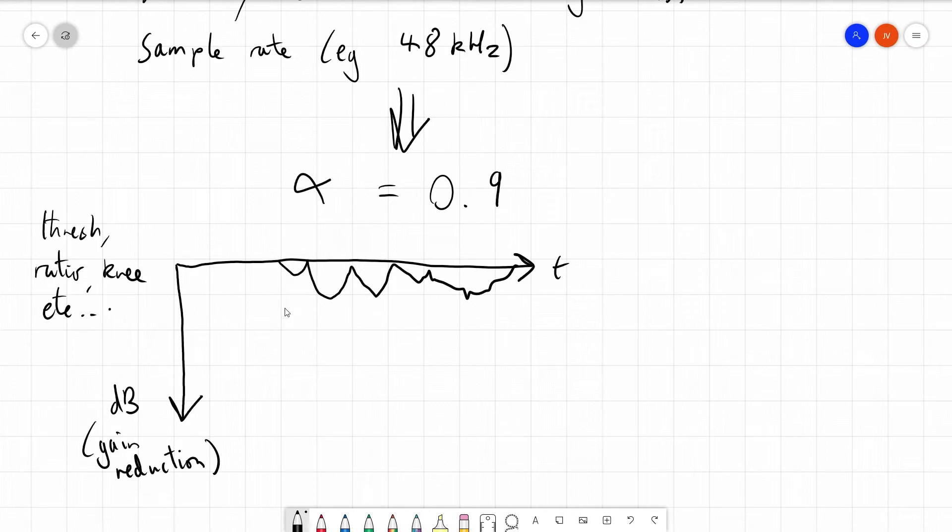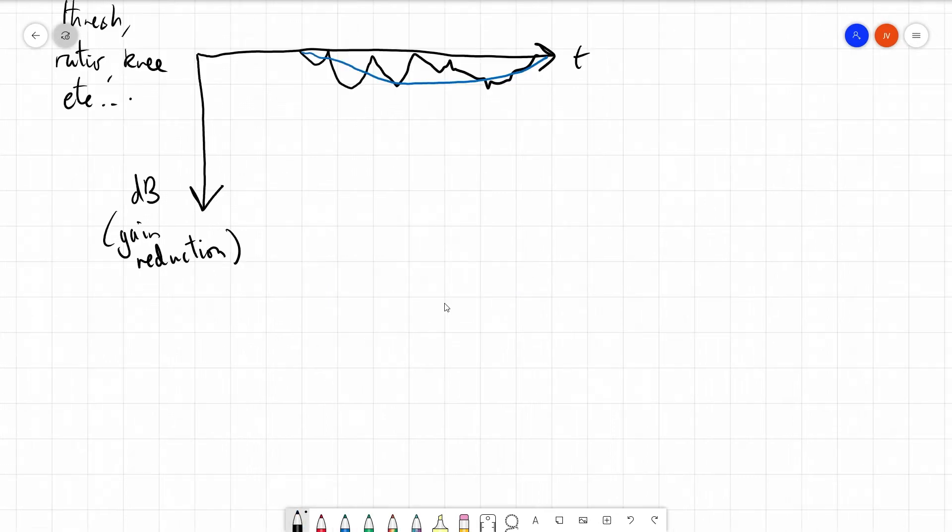So how do we use this alpha value to get from this, which is very wobbly, to something that is very smooth? Like maybe I can't really draw smooth things with this pen, but you get the idea. We want to smooth that out basically.